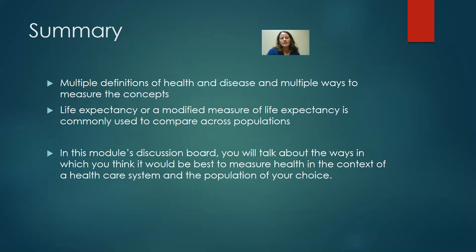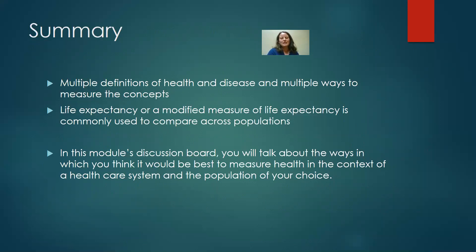In summary, there are multiple definitions of health and disease and multiple ways to measure these concepts — it really depends on context and what you're interested in. Life expectancy, or modified measures such as QALYs or DALYs, are commonly used to compare across populations. For this week's module discussion board, think about how you would measure health in a particular health setting and population you're interested in — what would be the best way or ways to measure their health, how often would you do it, what method would you use, and how would you get people to participate?